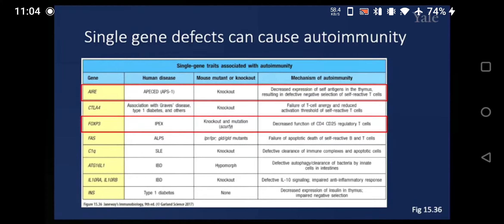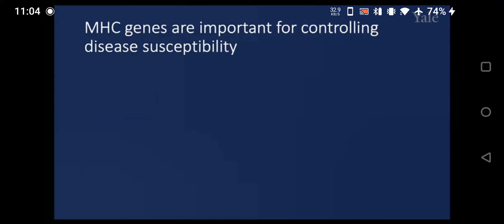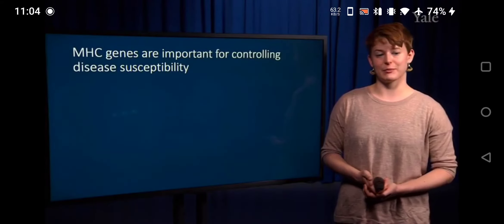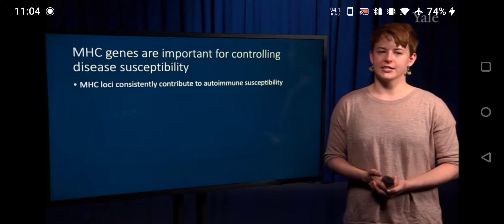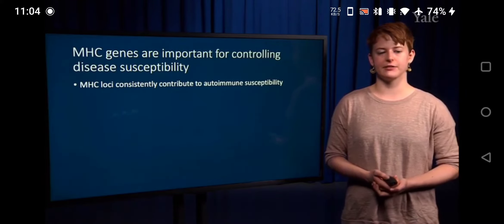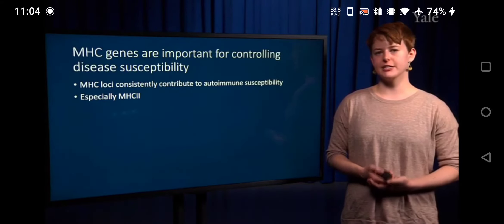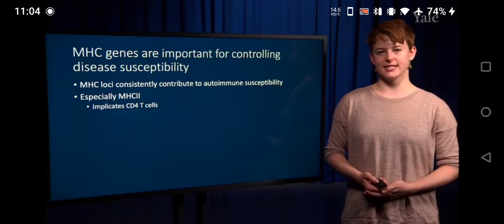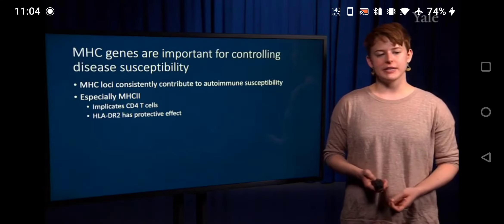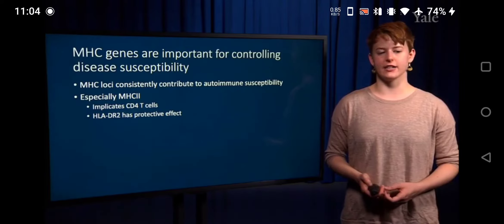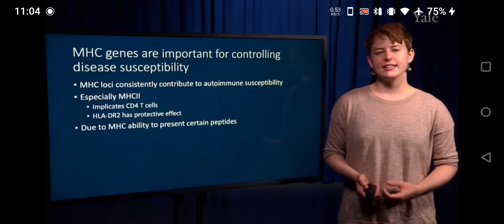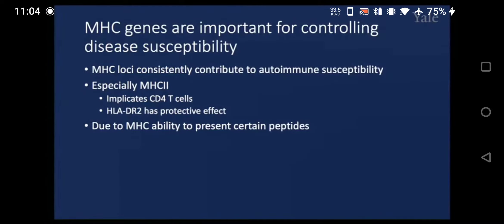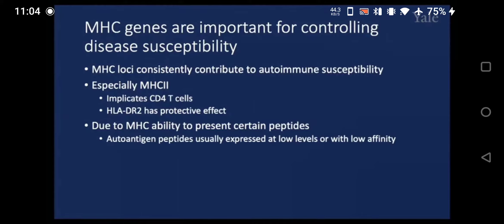MHC genes are very important for understanding disease susceptibility. MHC loci are actually one of the top hits in genes that contribute to susceptibility to autoimmune diseases, especially MHC-2, which really implicates CD4 T-cells in many of these diseases. In humans, the HLA-DR2 allele has a protective effect against autoimmune disease development, thought to be due to the differential ability of MHC to present different peptides.